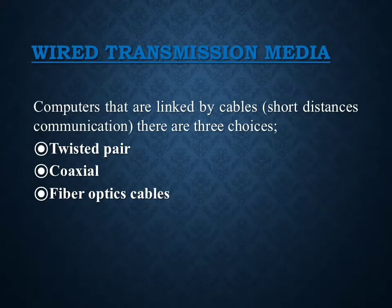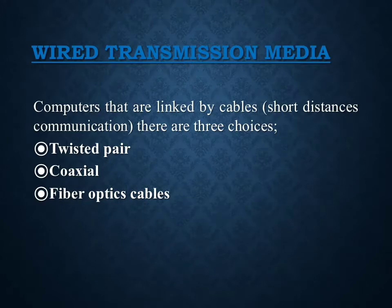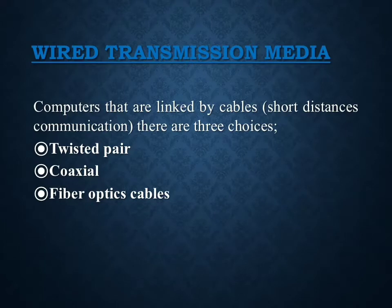For wired or cable transmission, computers are linked by cables for short communication distances. There are three choices for linking computers or devices together: twisted pair, coaxial cable, and fiber optic cable. We're going to look at them individually so we can have a better understanding of how these cables look and how they work.